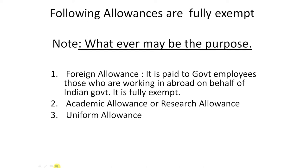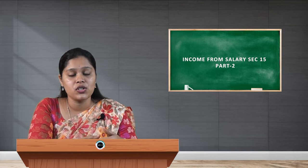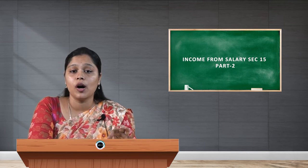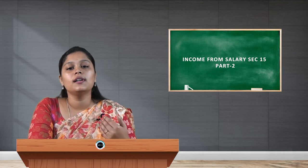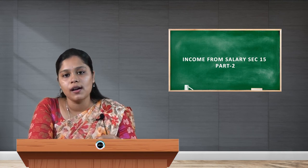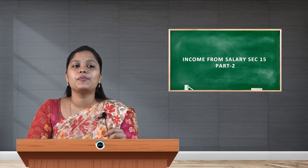Next one: academic allowance or research allowance. Academic allowances are those allowances which are provided to the employees in order to motivate employees to take an active part in the research and development sector. The spent amount is fully exempt from tax. Next one: uniform allowance. Uniform allowances are those allowances which are provided to the employees in order to purchase or maintain uniform which a person has to wear during office hours. This is about fully exempt allowances.